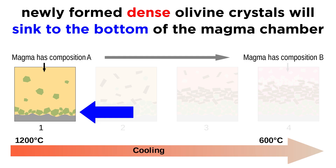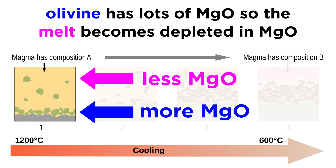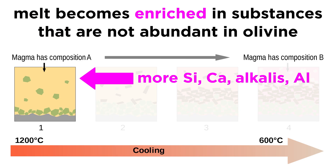The olivine crystals, which are more dense, will sink to the bottom of the magma chamber, becoming isolated from the upward moving magma. Since olivine has a smaller fraction of silica compared to the melt, the melt will become enriched in silica as olivine crystallizes. In fact, the melt will become enriched in everything but MgO, which gets depleted making olivine, since olivine has a higher fraction of MgO than the melt. The result is a melt that becomes enriched in silica, calcium, alkalis, and aluminum as it cools and moves upward.